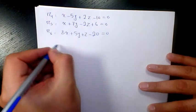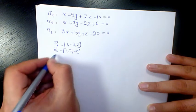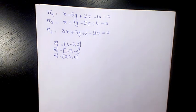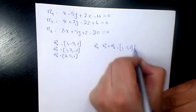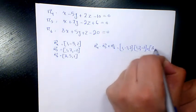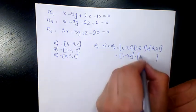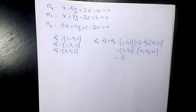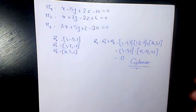The next example has normals n4 equal to (1, -5, 2), n5 equal to (1, 7, -2), and n6 equal to (8, 5, 1). None of them are parallel. Computing the scalar triple product n4 dot (n5 cross n6): the cross product gives (17, -17, -51), and the dot product equals zero. Since normals are not parallel but are coplanar, the planes intersect either in a line or not at all.